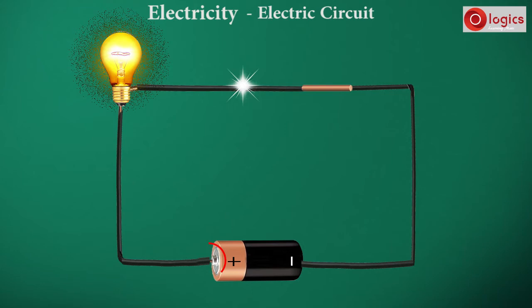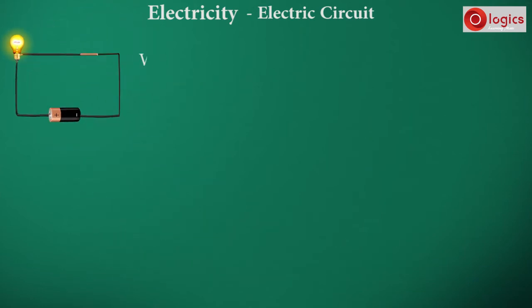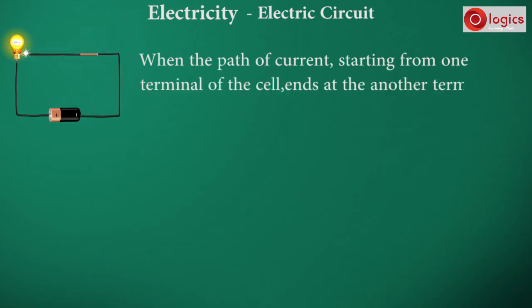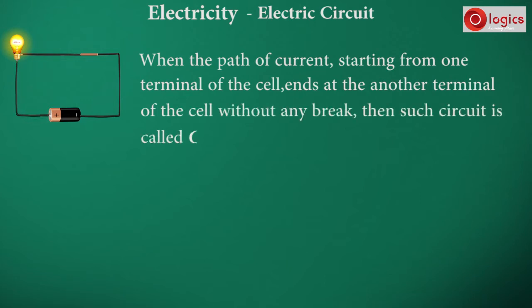As you know, this is one terminal of the cell, and this is another terminal of the cell. When the path of current starting from one terminal of the cell ends at the another terminal of the cell without any break, then such a circuit is called a closed circuit or complete circuit.